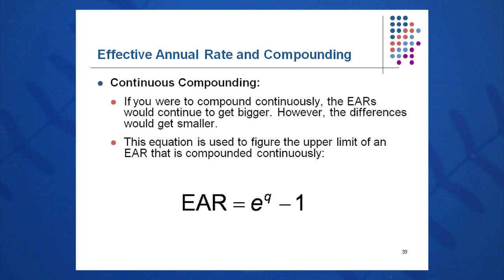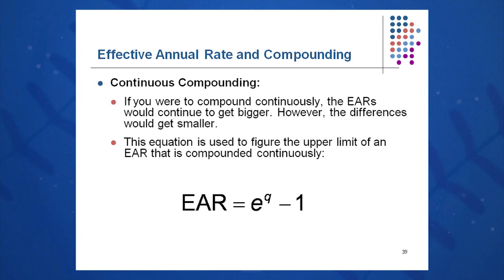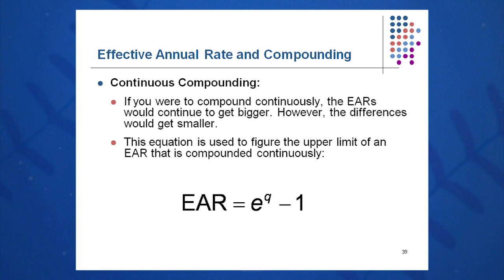If we have continuous compounding, you can plug a very large number into the equation — 1 plus quoted rate over m, to the mth power, minus 1 — using a million, a billion, or a trillion, and you'll get close to the continuous compounding result. The easier way is to use e to the quoted rate, minus 1, which gives you the same answer for continuous compounding.